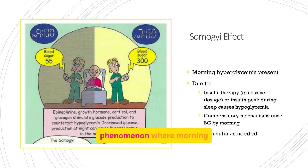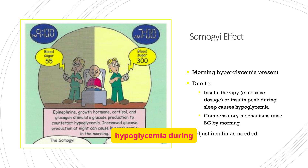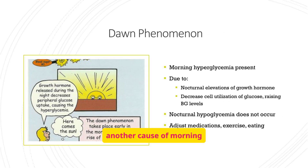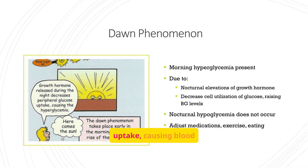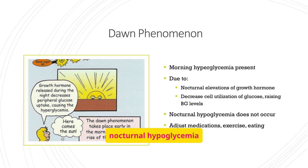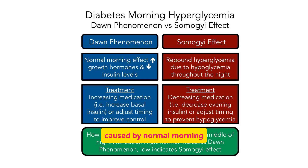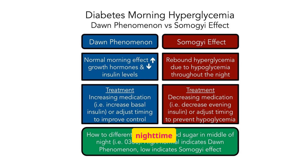The Somogyi effect is a phenomenon where morning hyperglycemia is present due to insulin therapy causing hypoglycemia during sleep. This triggers compensatory mechanisms that raise blood glucose levels by morning. The dawn phenomenon is another cause of morning hyperglycemia: growth hormone released during the night decreases peripheral glucose uptake, causing blood glucose levels to rise. Unlike the Somogyi effect, nocturnal hypoglycemia does not occur with the dawn phenomenon.